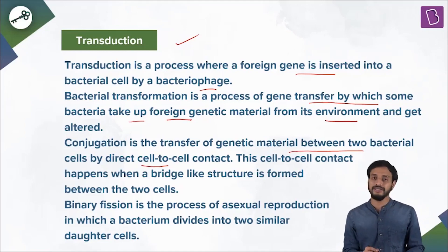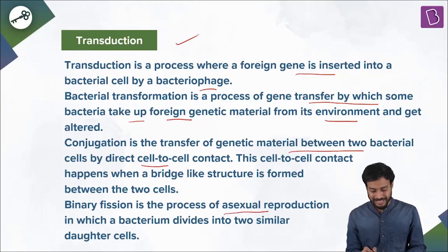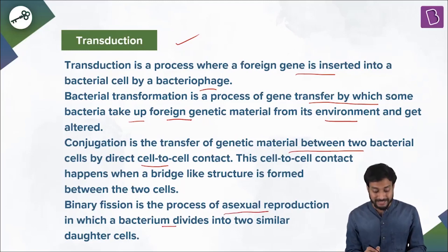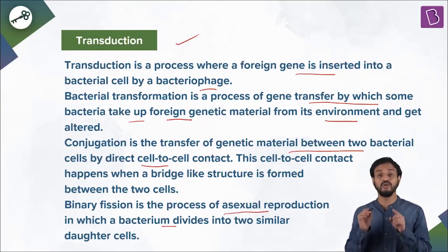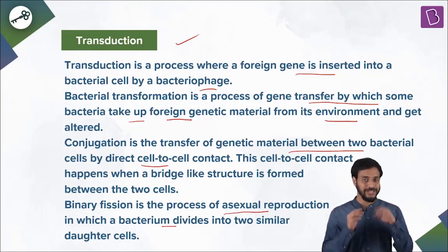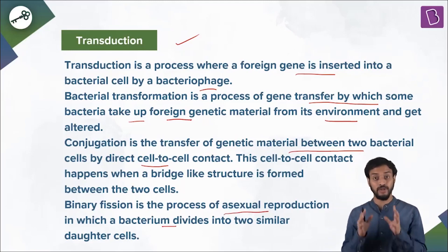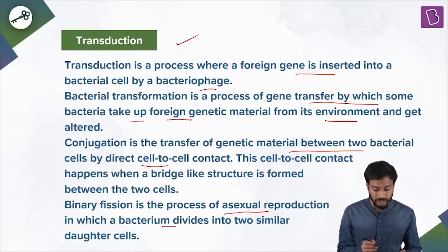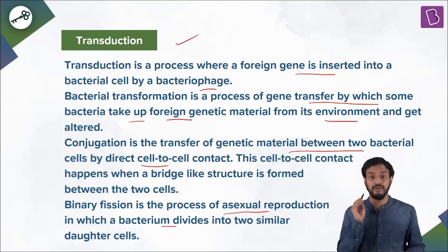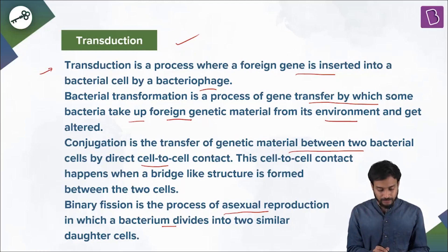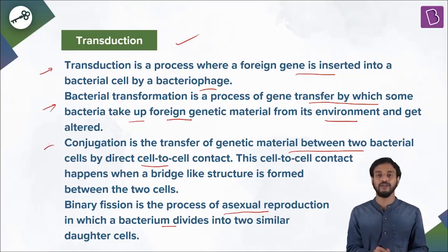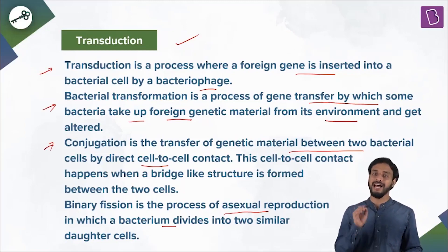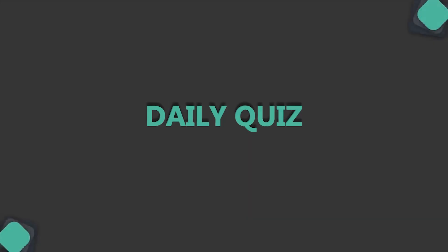Binary fission is a process of asexual reproduction in which the bacterium divides into two daughter cells. So the answer to this question is transduction. Here we learned the important terms: transduction, transformation, and conjugation.